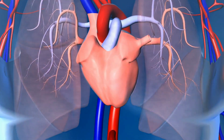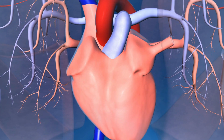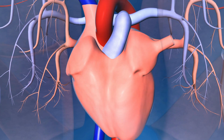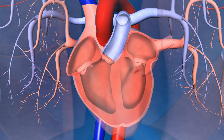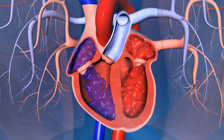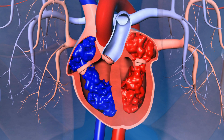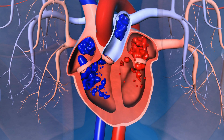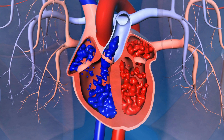PA catheters are a type of invasive balloon-tipped catheter that allows us to get information on the function of the heart itself. We can do this by obtaining direct measurements of right-sided cardiac function and filling pressures, as well as indirect measurements of left-sided cardiac function and filling pressures. It also provides an estimation on cardiac output via the principle of thermodilution.